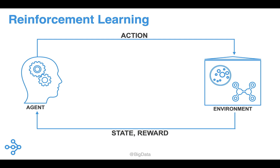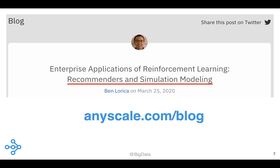For example, churn might be due to an accumulation of minor events. There are many business problems and applications that can be cast as sequential decision-making, and for this set of problems, RL is starting to be evaluated alongside more familiar approaches.